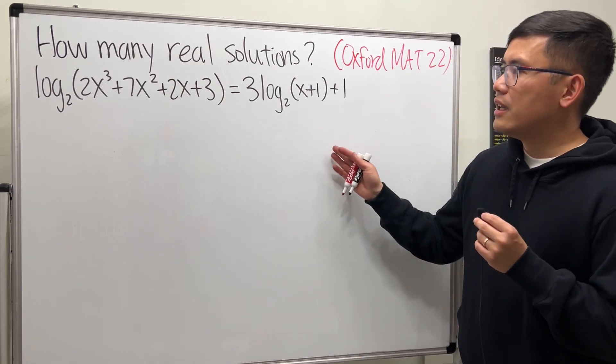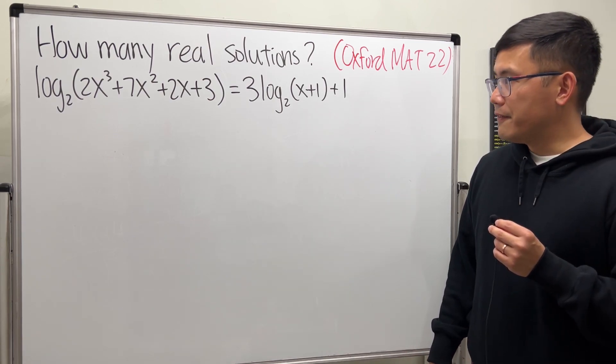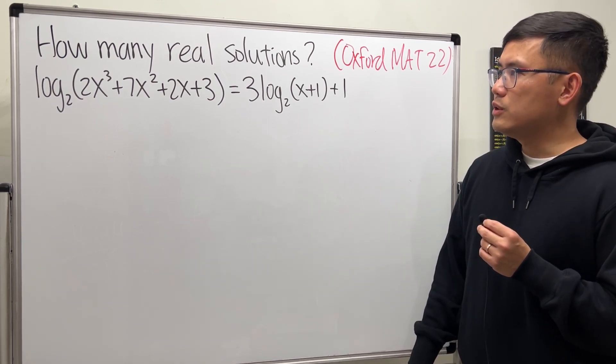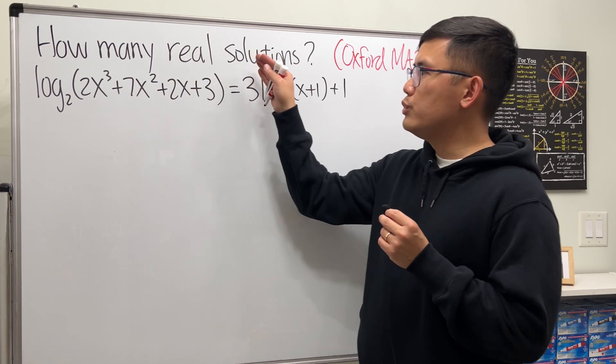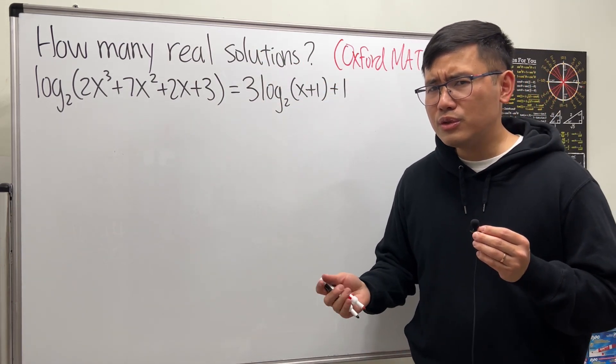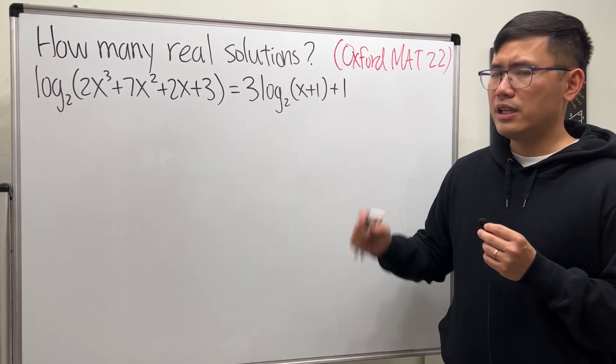Done? All right. My first thought to this question is that since we are only looking for how many real solutions, maybe we can just look at the graph of the left hand side and also the right hand side and see how many times they intersect.